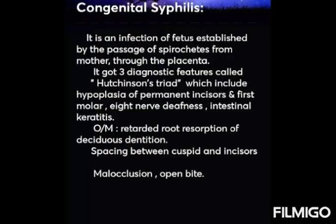Congenital syphilis is an infection of the fetus established by the passage of spirochetes from the mother through the placenta. It has three diagnostic features called Hutchinson's triad, which includes hypoplasia of permanent incisors and first molars, eighth nerve deafness, and interstitial keratitis. Oral manifestations include retarded root resorption of deciduous dentition, spacing between the cuspid and incisors, and molar occlusion with open bite.